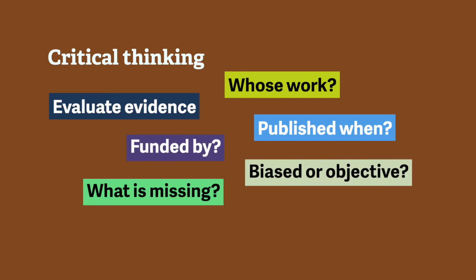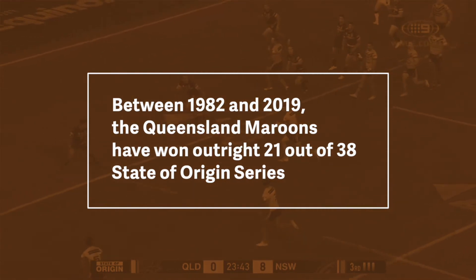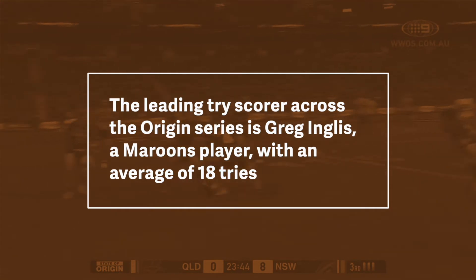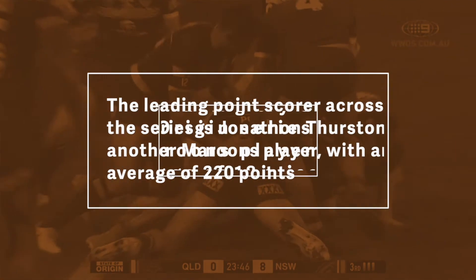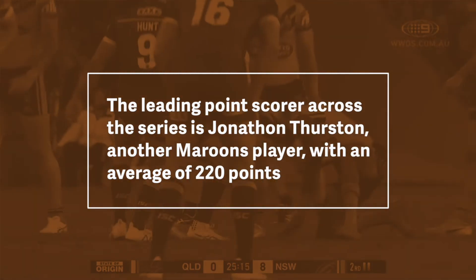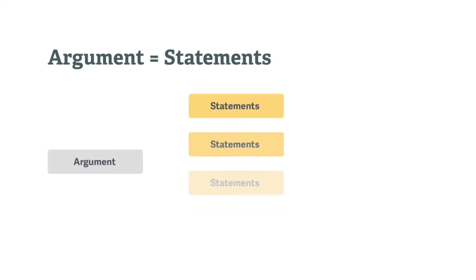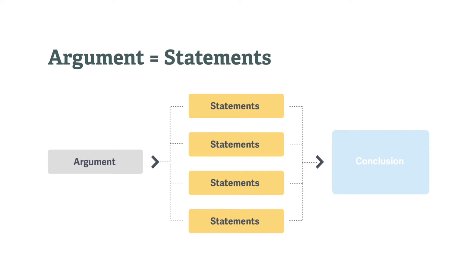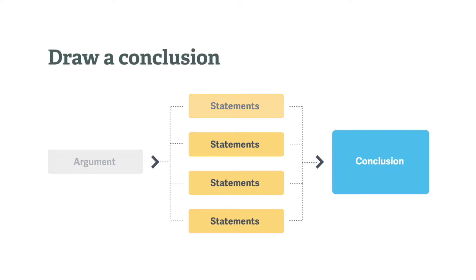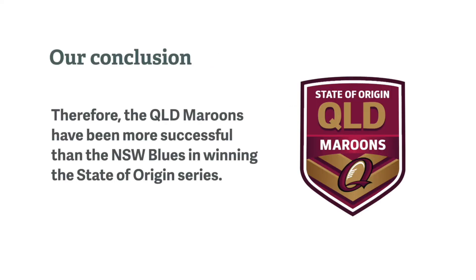Here's how you might construct an academic argument about who is best. We can see that an argument is a collection of statements. What is important to realise is that when we put these statements together, it allows us to make another statement — to draw a conclusion from these pieces of information. That is, that the Queensland Maroons have been more successful than the New South Wales Blues in winning the State of Origin series.